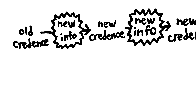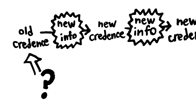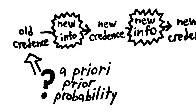So you have this chain of updating your credences each time you learn some new information. But what's at the very beginning of this chain? What's the prior probability of a theory before you get any information at all? In effect, what's the a priori prior probability of a given theory?